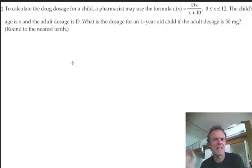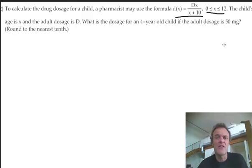Right, a little bit more awkward. Calculate the drug dosage for a child. So we have the formula here. Now, don't worry too much about this. It's about a child between 0 and 12. This particular child is 4. In other words, x equals 4. Let's just write that down.